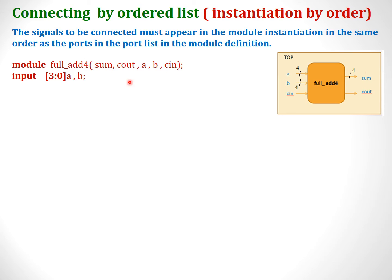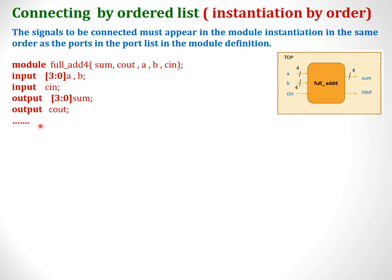We declare the input variables a and b. Since it is a 4-bit adder, we use a vector representation [3:0]. We declare the separate single-bit input cin, the 4-bit sum output, and the single-bit cout output. This is the normal declaration. Let us not get into the internals or the actual logic of the adder — this is just declaration of the code with the input and output ports.